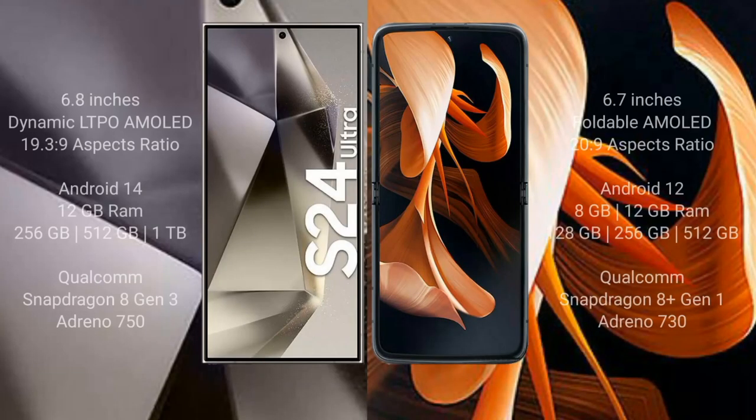Samsung Galaxy S24 Ultra comes with a 6.8-inch dynamic LTPO AMOLED display and aspect ratio 19.3:9. Motorola Razr comes with a 6.7-inch foldable AMOLED display and aspect ratio 21:9. Samsung Galaxy S24 Ultra runs on the Android 14 operating system. Motorola Razr runs on the Android 12 operating system.